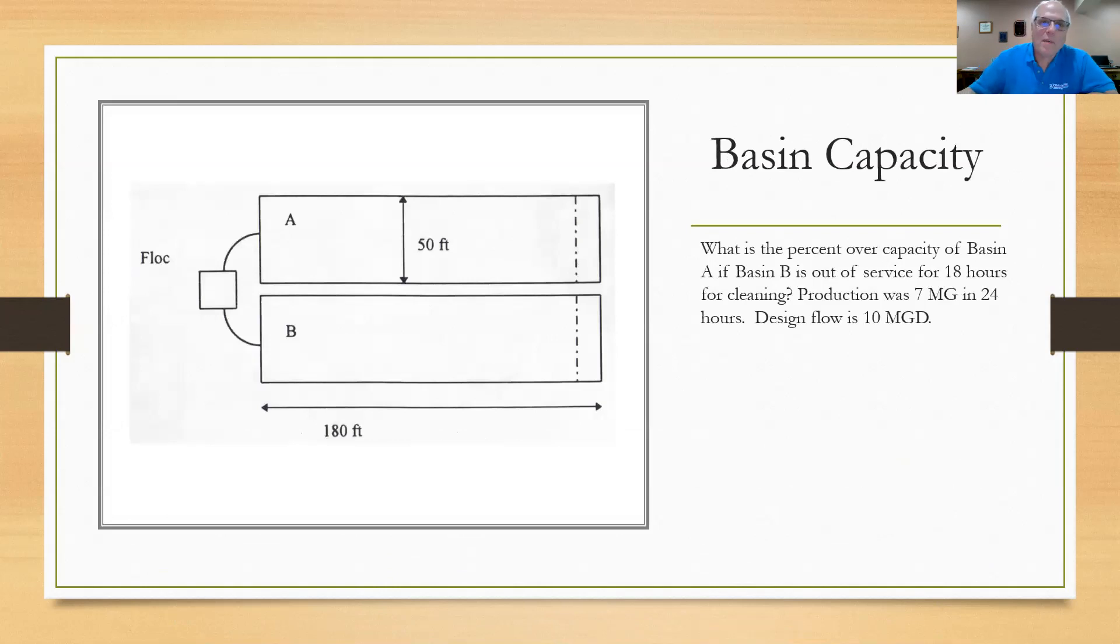Okay, here's a basin capacity problem. I'll show you a drawing here of a flocculator emptying into two sedimentation basins that are 180 feet long, 50 feet wide each, and a weir at the end of each. They tell you that you have to take a basin out of service for some cleaning. You want to know the percent over capacity of the basin A if basin B is out of service for 18 hours for cleaning. They tell you that production was 7 million gallons in that 24 hour period. They also tell you that design flow for this system is 10 MGD. So go ahead and try to answer that and we'll find the answer on the next slide.